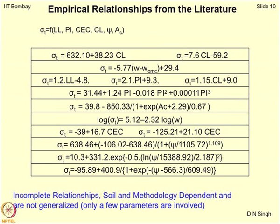These models using only one parameter to determine tensile strength are basically single-parameter models. In the second equation, you find W minus W_OMC, where W_OMC corresponds to moisture content at OMC and W is the moisture content of the soil at which you are working. This philosophy shows that any deviation from the OMC of the soil in terms of moisture content will be reflected in its tensile strength.